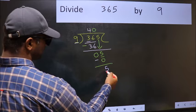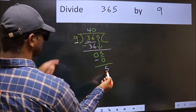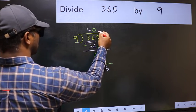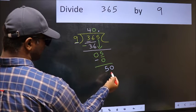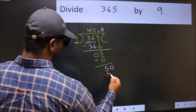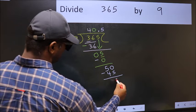Over here, we did not bring any number down, and 5 is smaller than 9. So now you can put a dot and take 0. So 50. A number close to 50 in the 9 table is 9 times 5, which is 45.